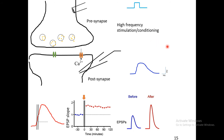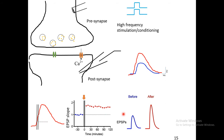To evoke long-term potentiation, researchers give high-frequency stimulation — generally 100 Hz frequency stimulation lasting for one second. After that high-frequency stimulation, when they give the same amount of current injection, they find an increase in the amplitude of the post-synaptic potential, suggesting that the strength of the synapse has increased. Another way of seeing this data is to plot the slope over time — if the slope is greater than baseline, synaptic efficacy has increased.